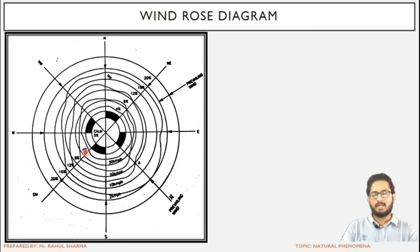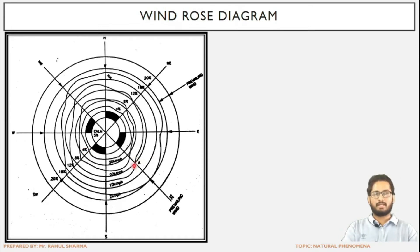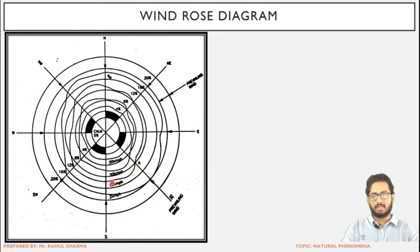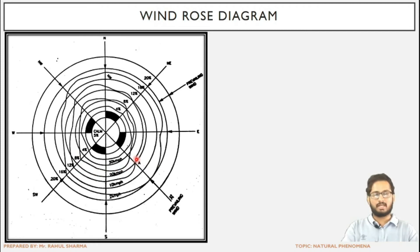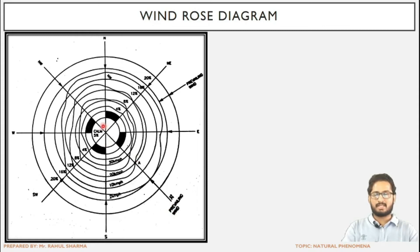Duration is not measured in seconds, hours, days, weeks, or months — it is indicated in percentage. For example, point A on the diagram represents wind flowing from the southeast direction, with a speed or intensity of 10 km/h indicated by the irregular line, and a duration of 8 percent shown by the concentric circle. The radial line indicates the direction of southeast.